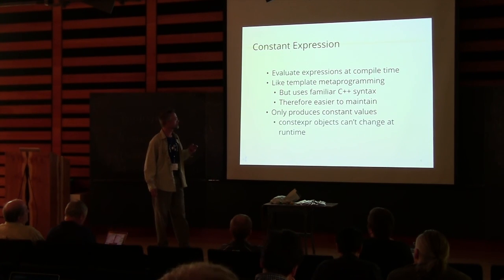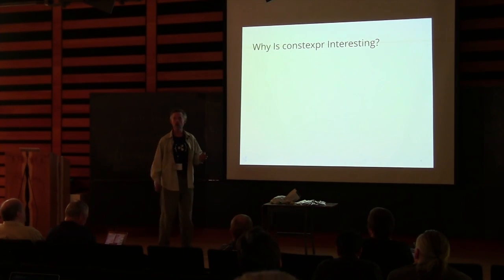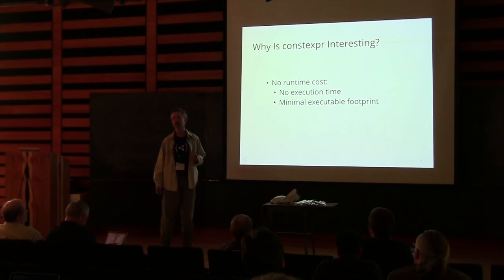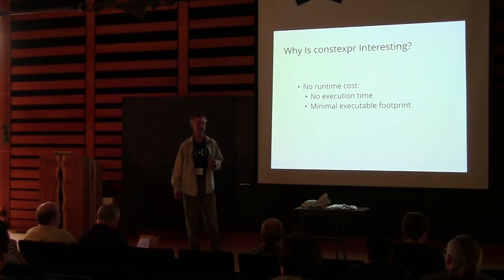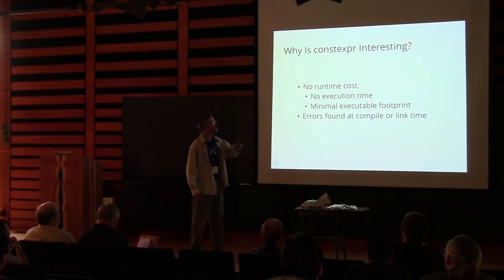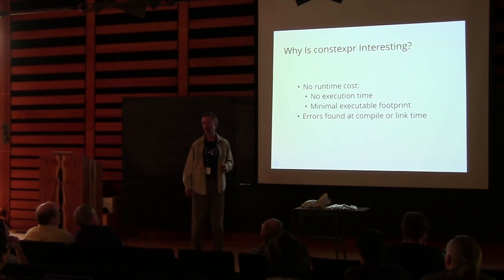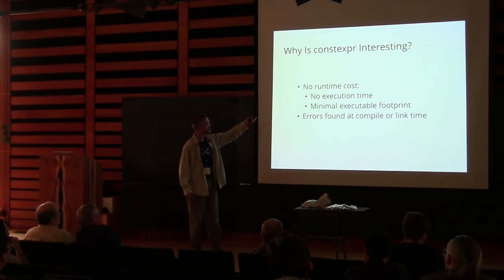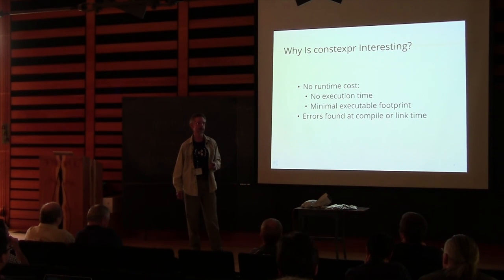Constexpr only produces constant values — constexpr objects cannot change at runtime. Why is this interesting? There's no runtime cost. I spent years doing embedded development, and something that I don't have to spend cycles on, I like that. No execution time, minimal executable footprint. The other thing I really like is you can find your errors at compile and link time. That's the real win — particularly for an embedded system, that's invaluable.